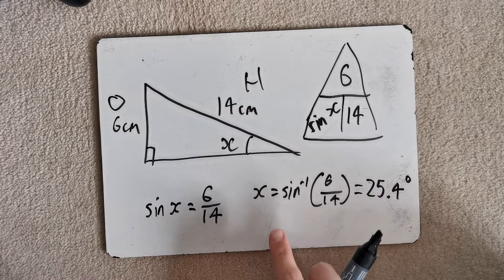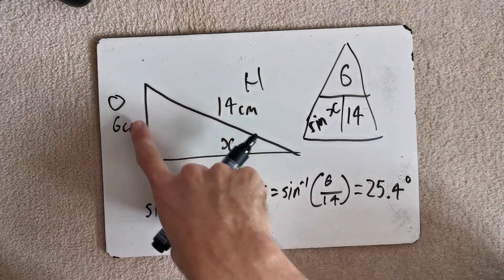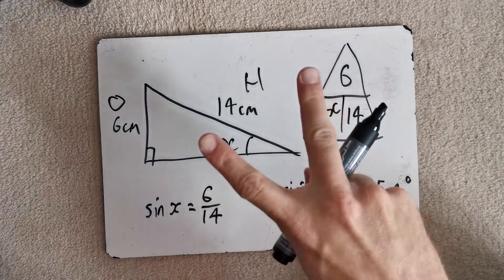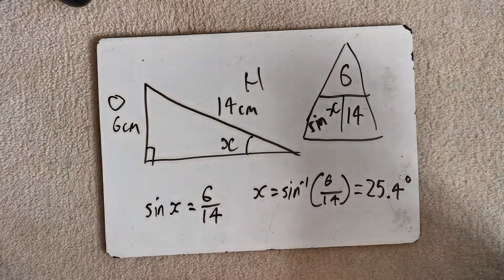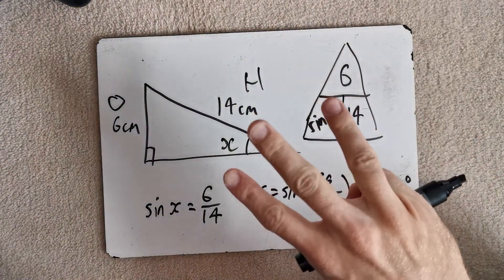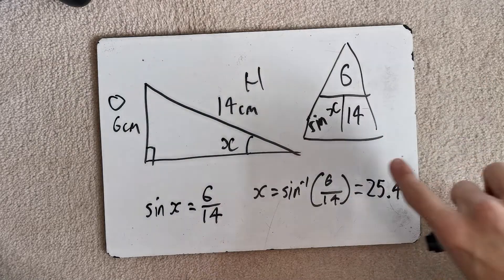So let's go through that once more. Step one, label the sides. We've labelled these sides. That's the opposite. That's the hypotenuse. Step two, we've decided which one of these we need to use. And we use sine. Step three, put this in. Plug it into the triangle. Plug it into the triangle there.